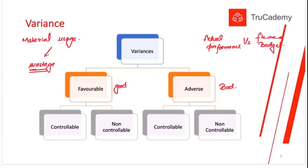But if we are talking about material price variance and prices in the world market have increased — if we are importing all the raw material from the international market, this is an external factor which is out of the control of management. It's not possible for a manager to control prices in the international market. Even switching suppliers won't help since all suppliers are now charging more. Such variances are non-controllable.